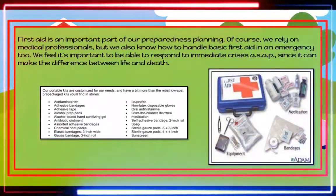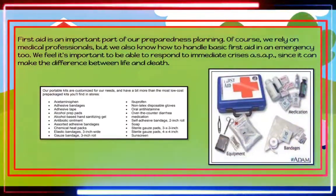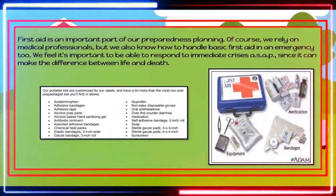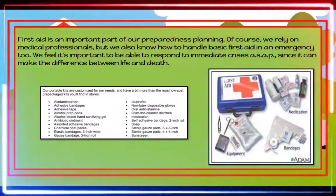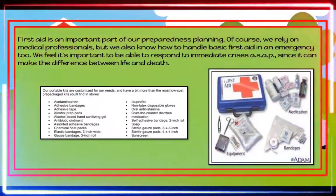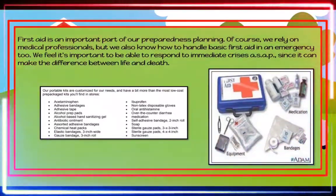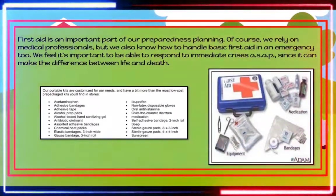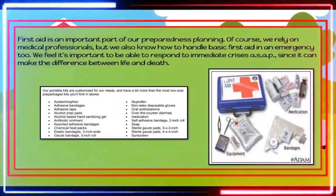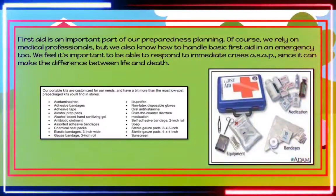First aid kit supplies include: acetaminophen, adhesive bandages, adhesive tape, alcohol prep pads, alcohol-based hand-sanitizing gel, antibiotic ointment, assorted adhesive bandages, chemical heat packs, elastic bandages (3-inch wide), gauze bandage (3-inch roll), ibuprofen, non-latex disposable gloves, oral antihistamine, over-the-counter diarrhea medication, self-adhesive bandages (2-inch roll), soap, sterilized gauze pads (3x3 inch), sterilized gauze pads (4x4 inch), and sunscreen.